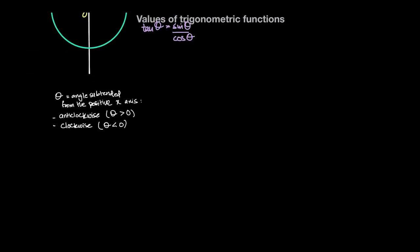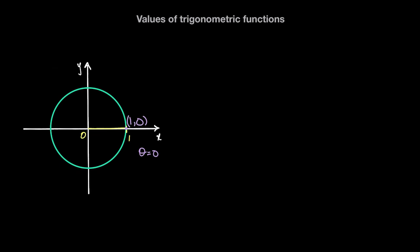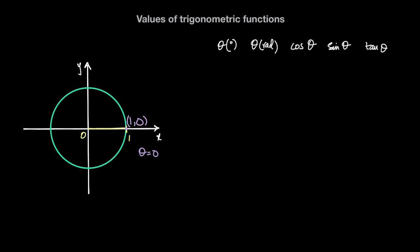Let's say the angle theta is just 0 degrees, or 0 radians, since the radius lies on the positive x-axis. The x-coordinate of the point on the unit circle is 1 and the y-coordinate is 0. So when theta equals 0 degrees, cosine of theta is 1, sine of theta is 0, and tan theta — which is sine theta over cosine theta — is also equal to 0.